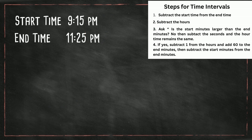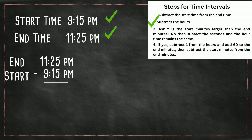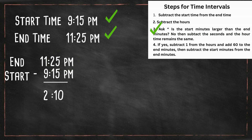Here's our next one. We have a start time of 9:15 p.m. and an end time of 11:25 p.m. First, we're going to subtract start from end, so we have 11:25 minus 9:15. Next, we're going to subtract the hours — 11 minus 9 is 2. We then ask ourselves: is the start minutes larger than the end minutes? 15 is not larger than 25, so we just subtract — 25 minus 15 is 10. So the time interval is two hours and 10 minutes.